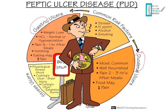We have a previous video comparing the duodenal and gastric ulcer in depth. Another type is the stress ulcer. What happens is that there is an increase in ACTH, which increases cortisol levels, and this induces the ulcer. What are the common risk factors in peptic ulcer disease?